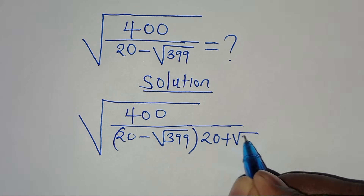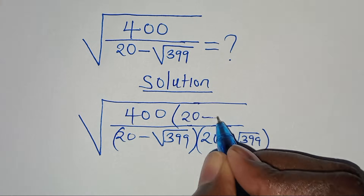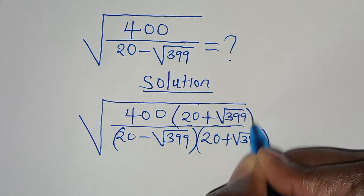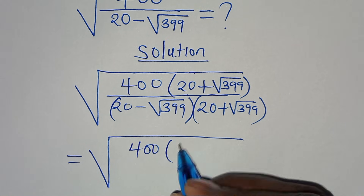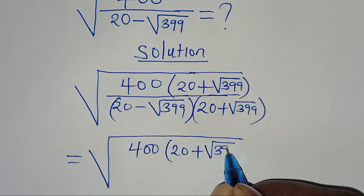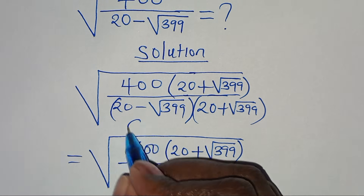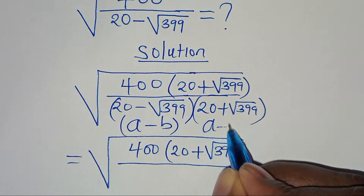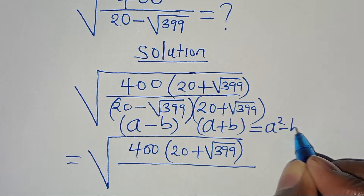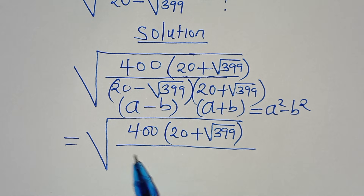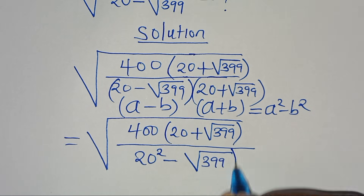The conjugate is 20 plus the square root of 399. We multiply this conjugate also in the numerator, so it's 400 times 20 plus square root of 399. Now 20 minus square root of 399 is in the form of a minus b, and 20 plus square root of 399 is in the form of a plus b, whereby a minus b times a plus b equals a squared minus b squared — the difference of two perfect squares. So in the denominator we have 20 squared minus the square root of 399 raised to the power of 2.